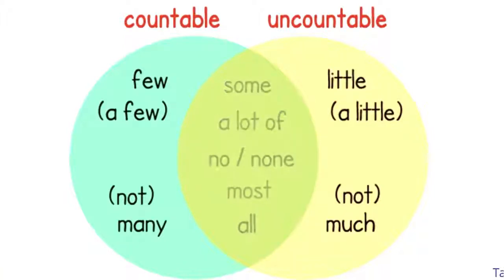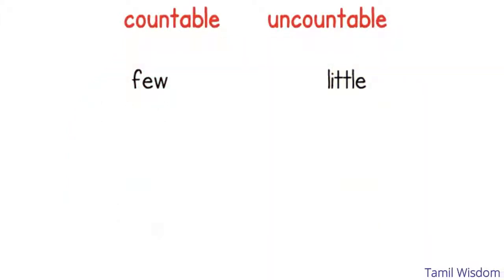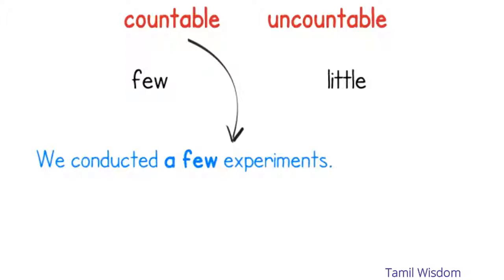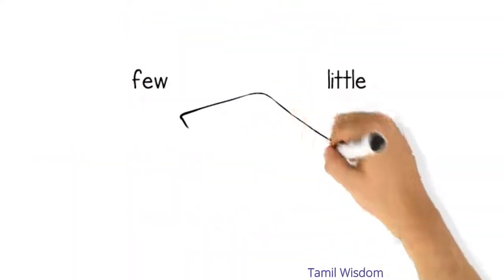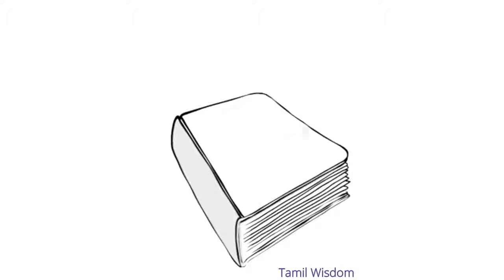Notice the difference. Few is used with countable but little is used for uncountables. For example, we conducted a few experiments but there is little experimentation in this area. There are many other quantifiers in English that you can use so be sure to check a good grammar book.